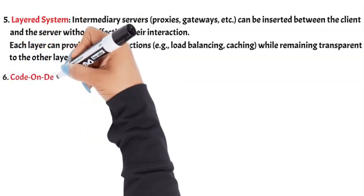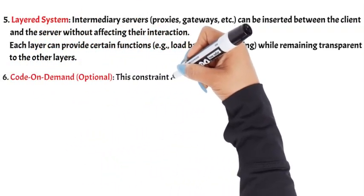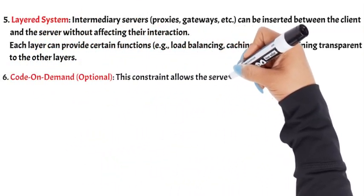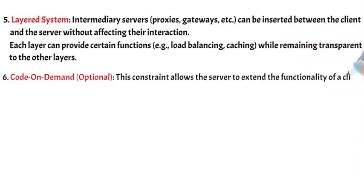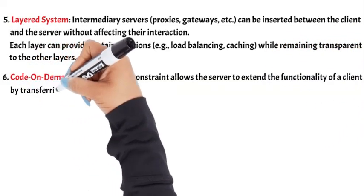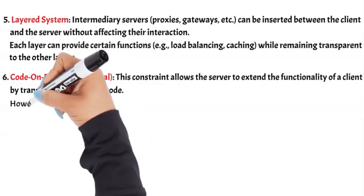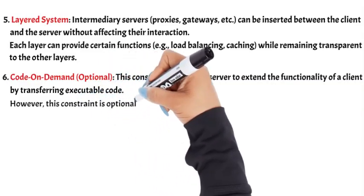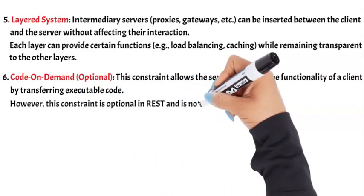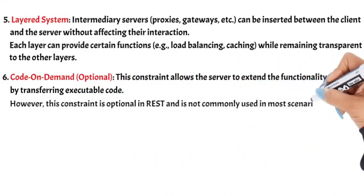6. Code-on-demand (optional) — this constraint allows the server to extend the functionality of a client by transferring executable code. However, this constraint is optional in REST and is not commonly used in most scenarios.